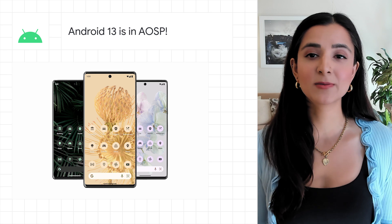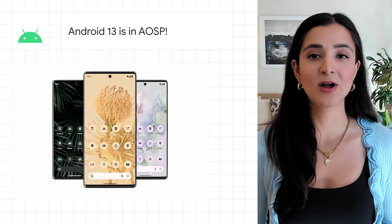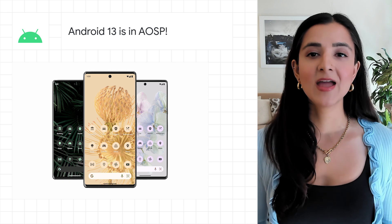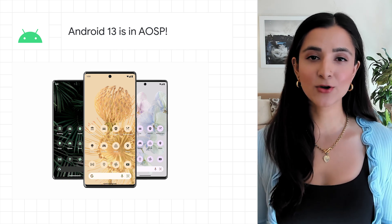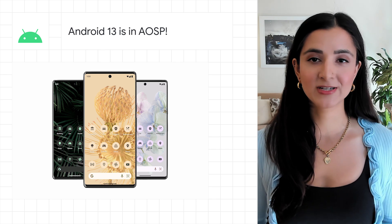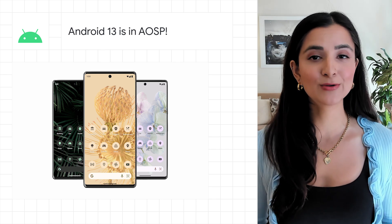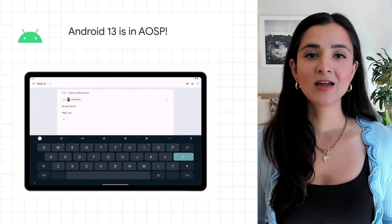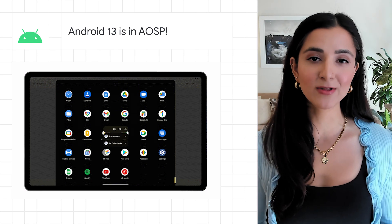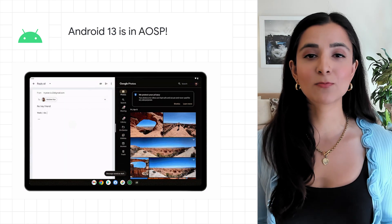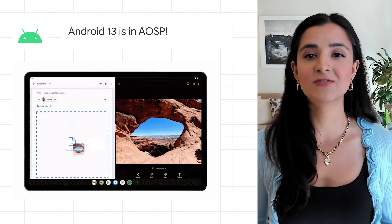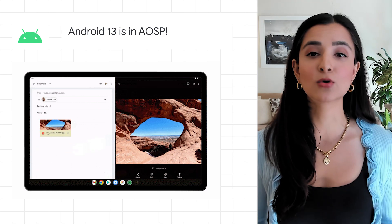Android 13 source has been pushed to the Android Open Source Project, and the newest version has officially been released. Android 13 is focused on the core themes of privacy and security, as well as developer productivity, making it easier for you to build great experiences for users. The team has continued to make Android an even better OS for tablets and large screens, giving you better tools to take advantage of the 270-plus million of these devices in use across the world.